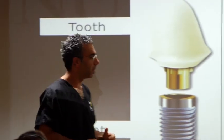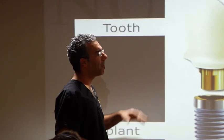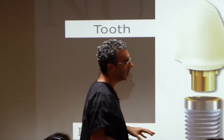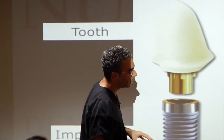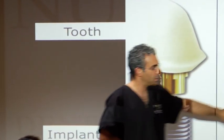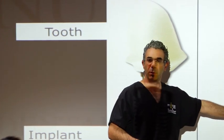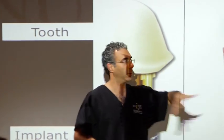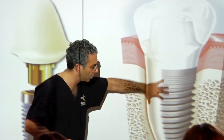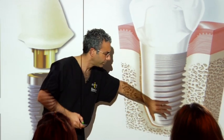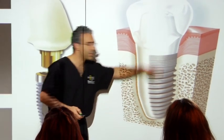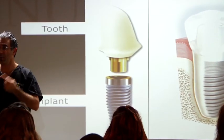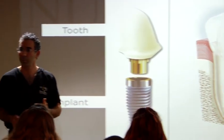My role and what a dental implant does: it is a post that replaces the missing root of a tooth. Once you lose a tooth, you lose not only the part you see but also the root, and we replace that with an artificial post.